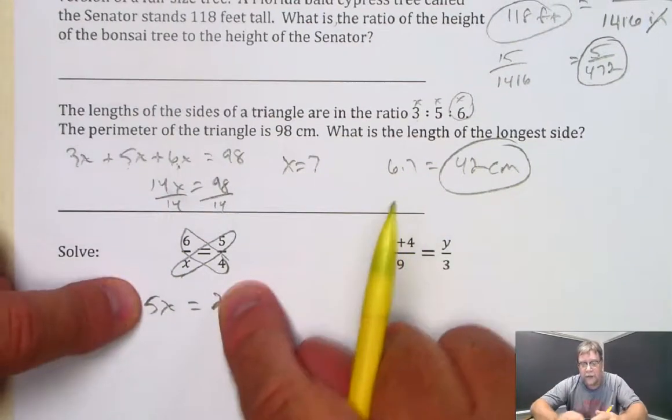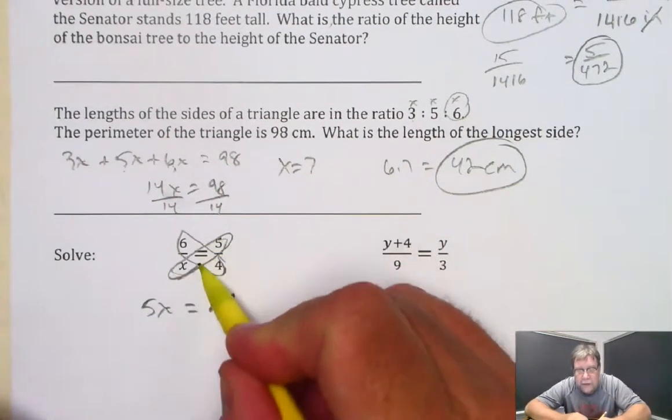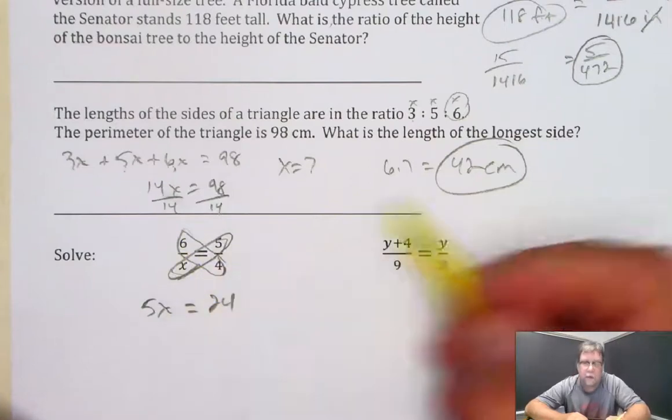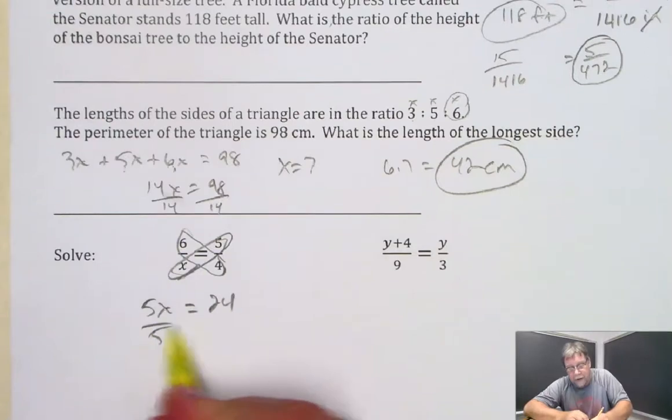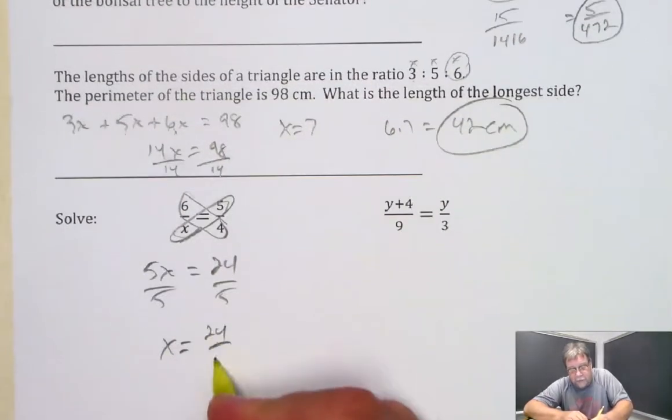Now, don't write this as a fraction. Remember, it's this cross product equals the other cross product. So the fraction disappeared altogether. And so we'll divide now by 5 to get our final answer of x equals 24 over 5. That could be written as a decimal if you wanted to.